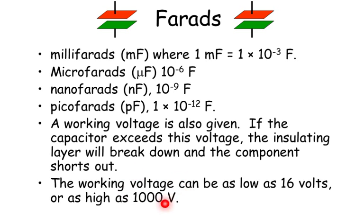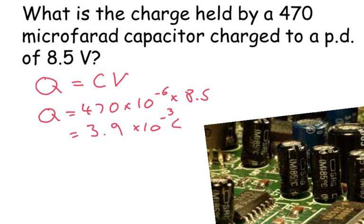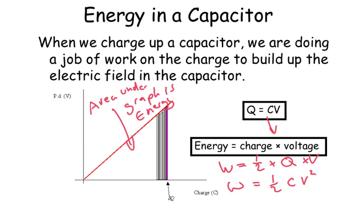What is the charge held by a 470 microfarad capacitor charged to a potential difference of 8.5 volts? Well we're going to use our equation Q equals CV. So the charge is going to equal the capacitance times by the voltage. And then we find our final charge is 3.9 times 10 to the minus 3 coulombs.